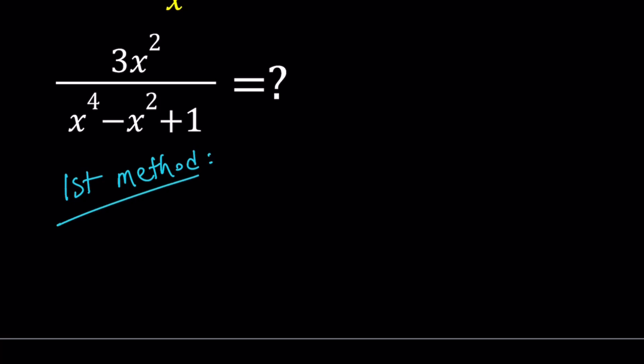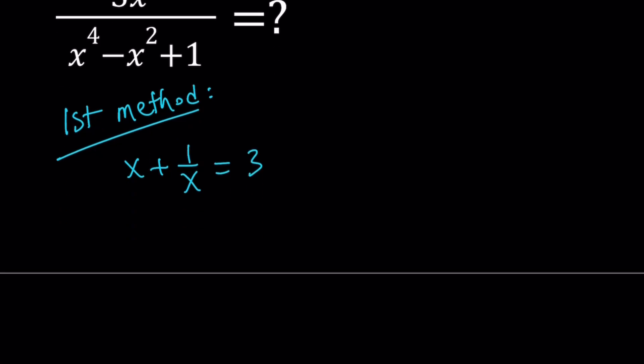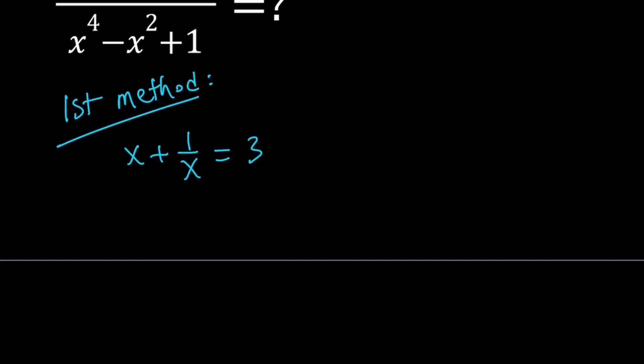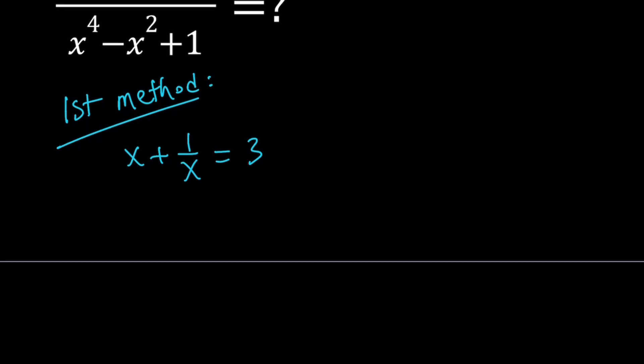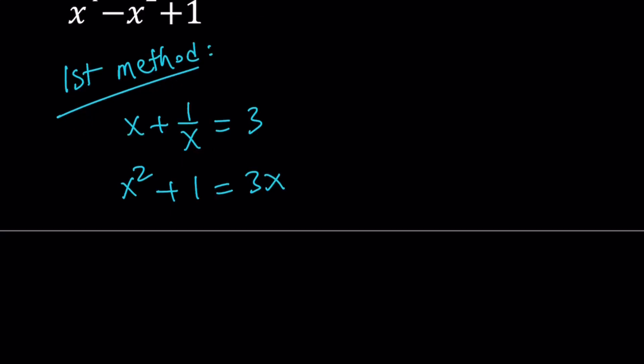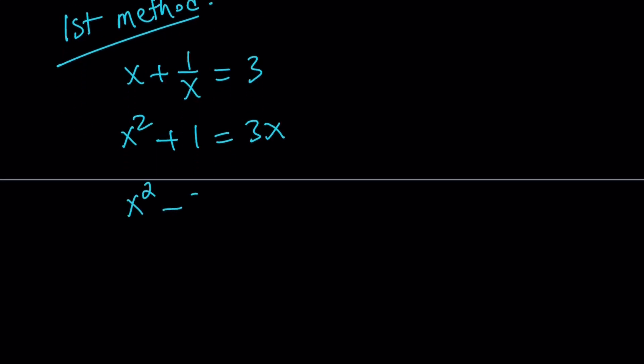For my first method, I'm going to use a direct approach and find what x is. Let's notice that x does not equal 0, so I can multiply both sides by x. That's going to give me the following. And then we can put everything on the same side and solve this quadratic.